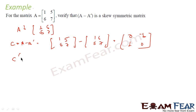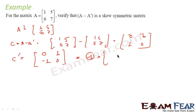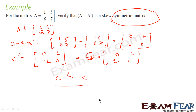But to prove it mathematically, we find C dash, which must equal minus C. C dash is obtained by replacing rows with columns of [0, -1; 1, 0], giving [0, 1; -1, 0]. If you observe carefully, this is nothing but minus 1 times [0, -1; 1, 0], which equals minus C. So C dash equals minus C, meaning C is a skew-symmetric matrix, and C is nothing but A minus A dash. So A minus A dash is skew-symmetric.